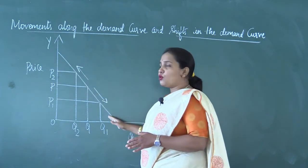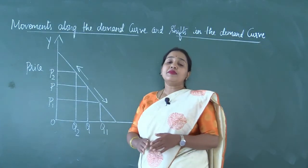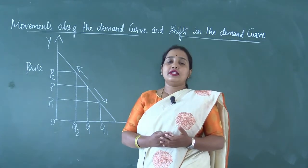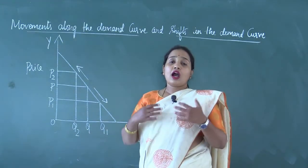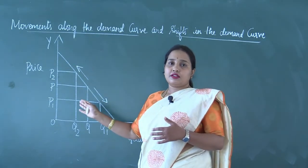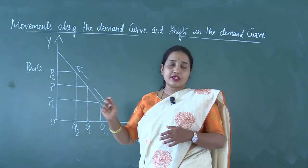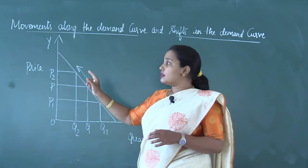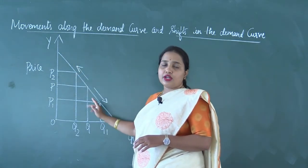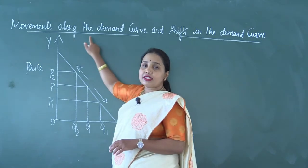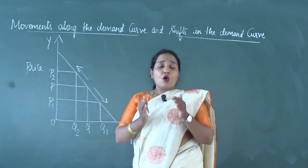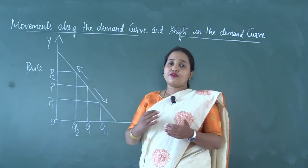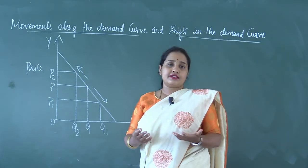We understood that the demand curve slopes downward from left to right. In today's class we are understanding graphically, or diagrammatically, how there will be a movement in the demand curve when there is a change in price. When there is a change in price and other things remain constant, the demand curve moves upward and downward — this is called movements along the demand curve. Demand also changes when there are changes in other factors like prices of related goods, income of the consumer, and taste and preferences.